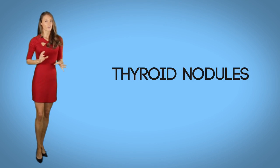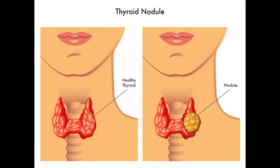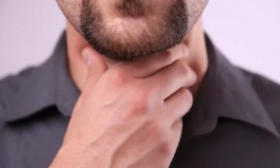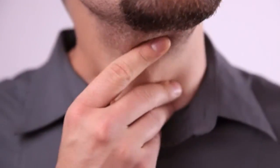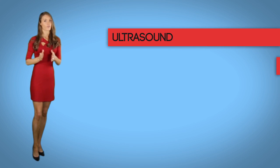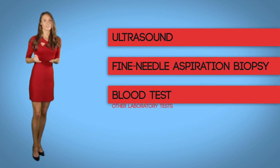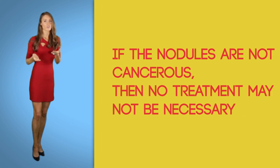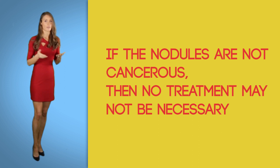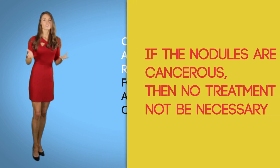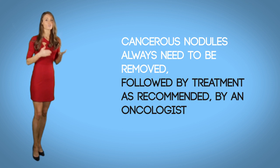Thyroid disorders can also occur because of thyroid nodules, which are growths on the gland. These can be solid or filled with fluid, and there can be a single nodule or a cluster. These small growths are usually harmless and can go undetected for years, though they can sometimes be palpated. Thyroid nodules can be cancerous — the doctor may order an ultrasound, fine needle aspiration biopsy, blood tests, or a thyroid scan. Non-cancerous nodules may require no treatment; cancerous nodules always need to be removed.